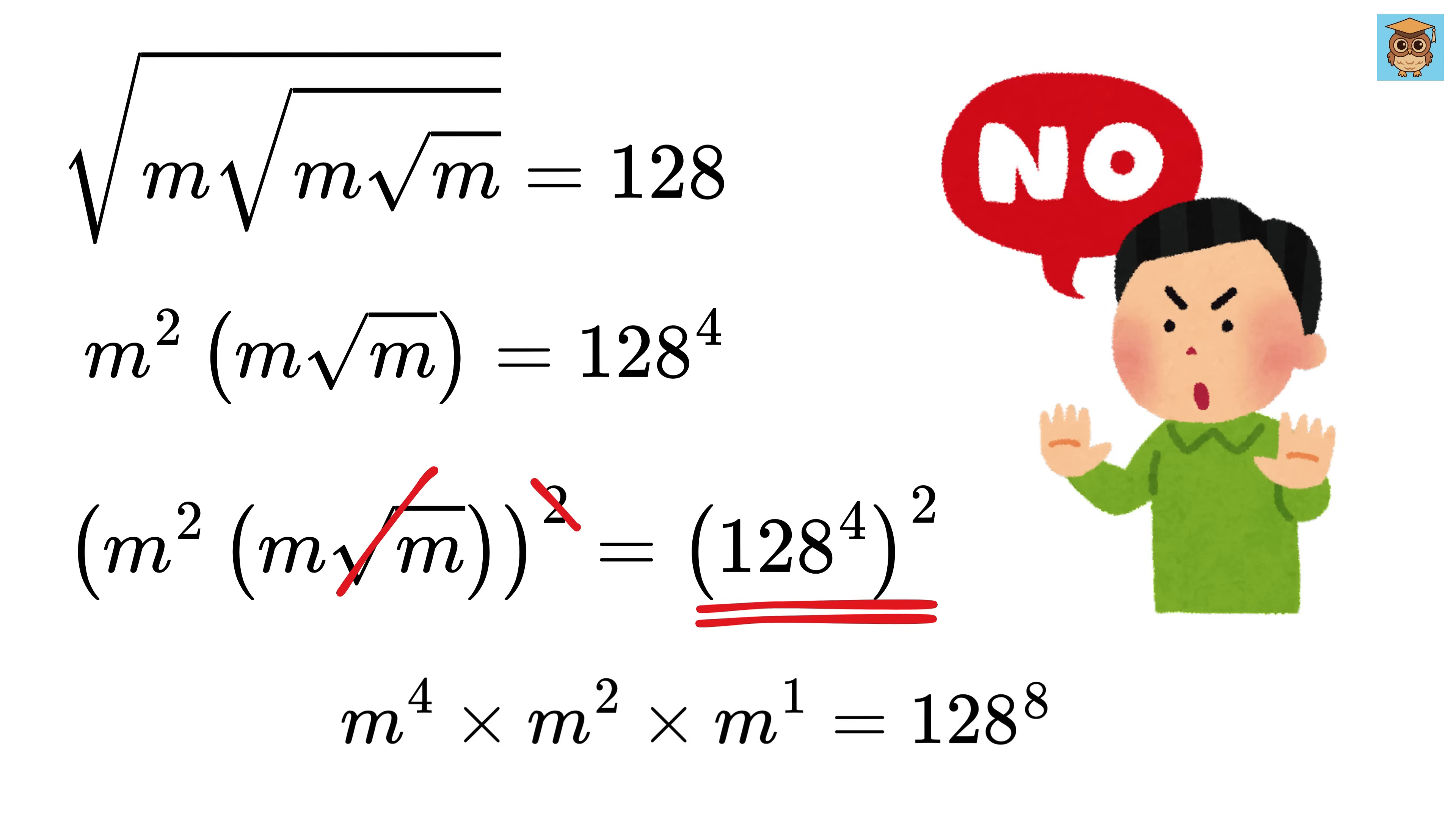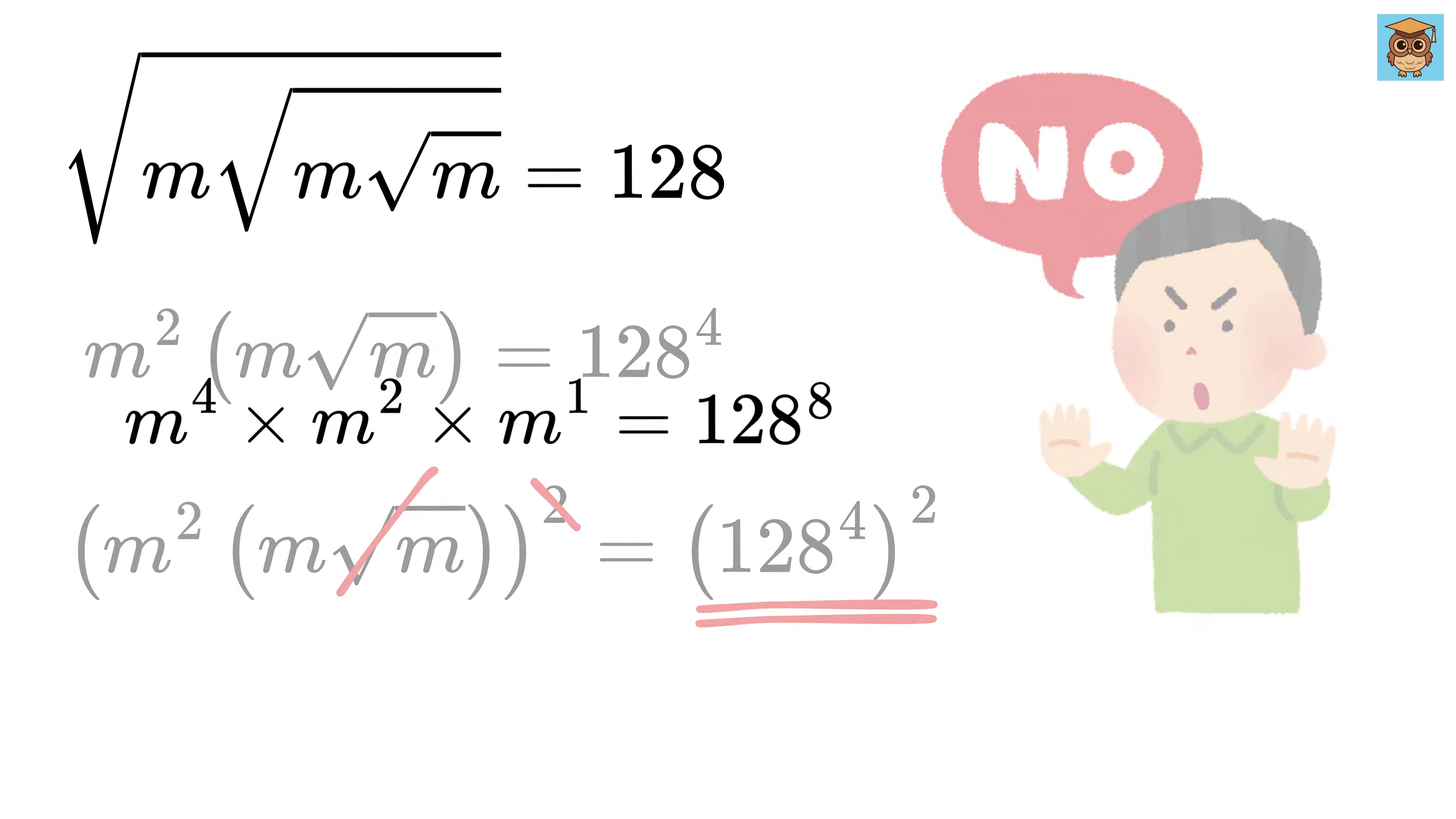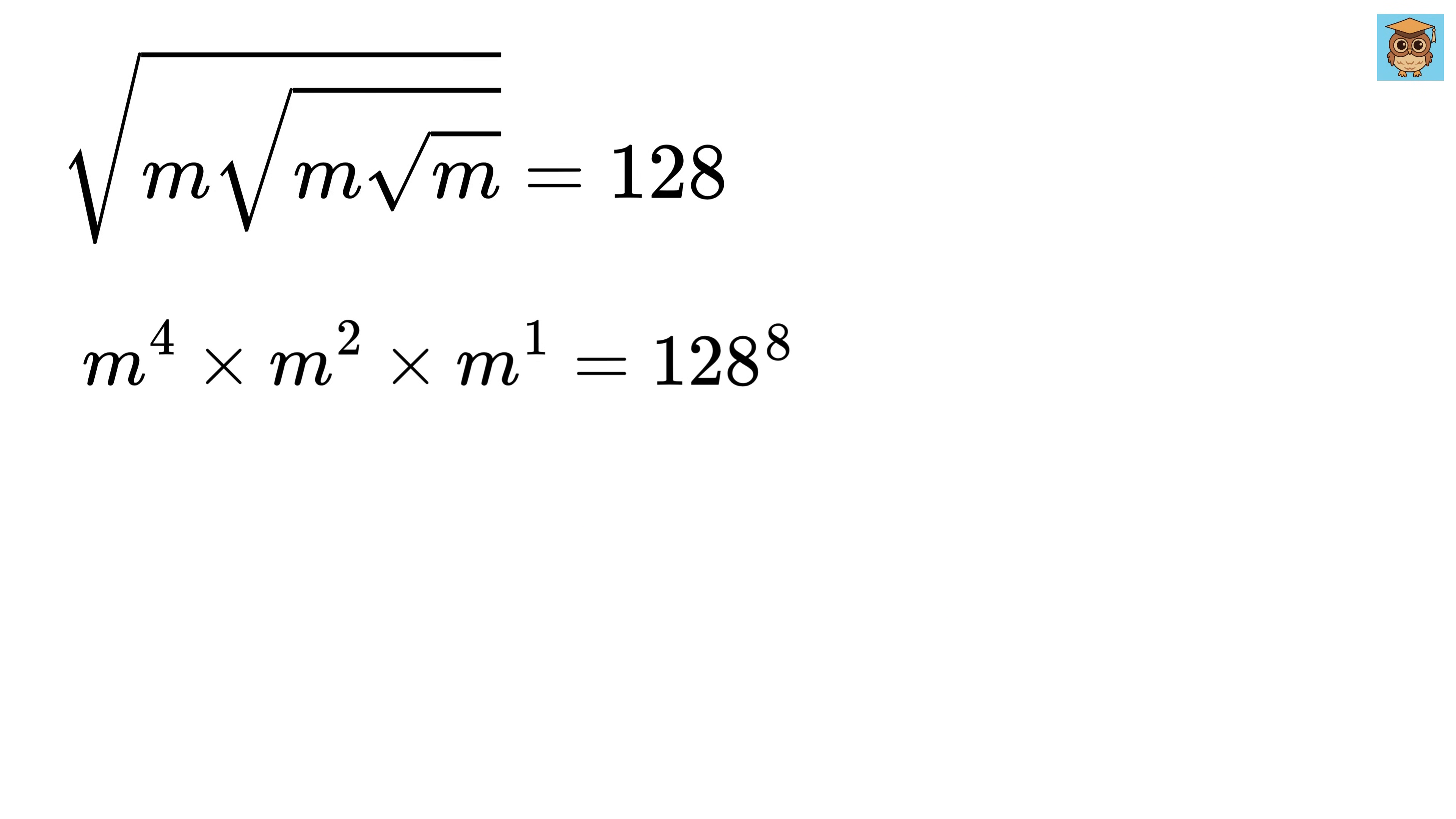Please don't be scared. We are about to simplify it. Now we will use this power rule, where if we have a raised to p times a raised to q times a raised to r, then it will be equal to a raised to p plus q plus r. So this will become m raised to 4 plus 2 plus 1, or m raised to the power 7. And that is equal to 128 raised to power 8.